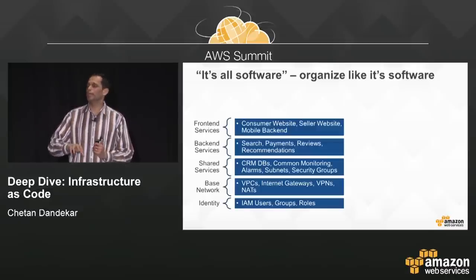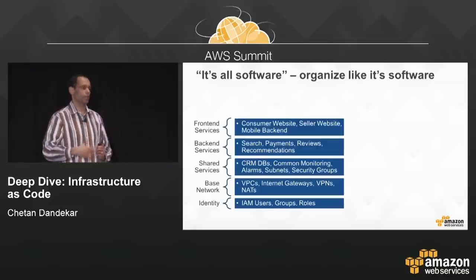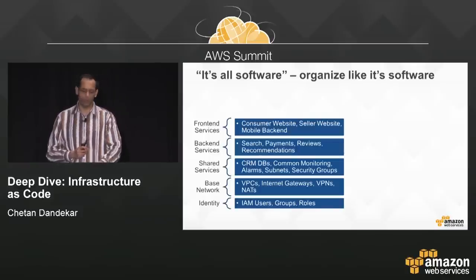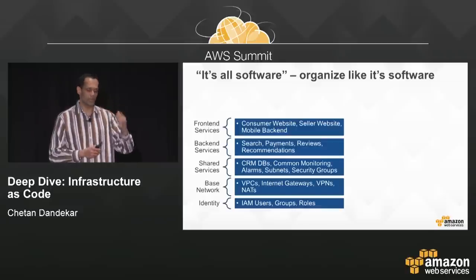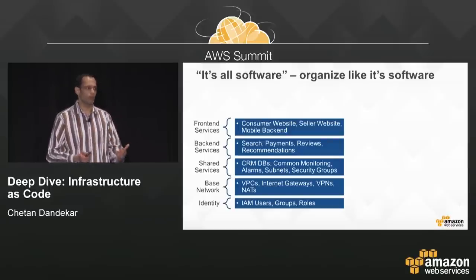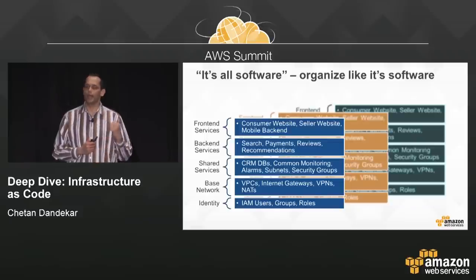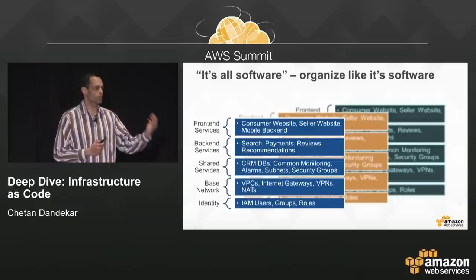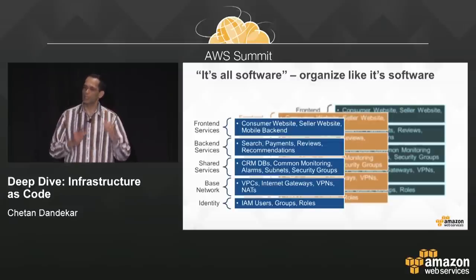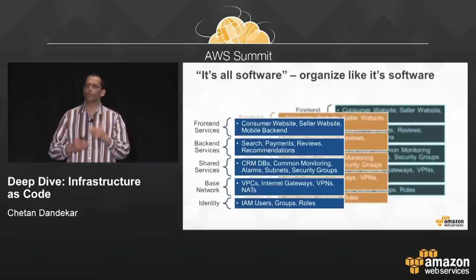If you're creating a network component specifically for a given web application — like a security group per application — then bundle it with that application rather than putting it in the base networking layer. Once templates are organized this way, you can quickly recreate your environments in dev, staging, or production, replicate them in new AWS accounts, or expand into another AWS region using the same set of templates.